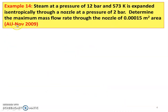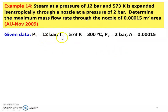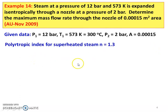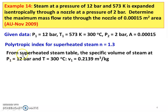The next question is from November 2009 question paper. Steam at a pressure of 12 bar and 573 Kelvin (300 degree Celsius) is expanded isentropically through a nozzle to a pressure of 2 bar. Determine the maximum mass flow rate through the nozzle of 0.00015 meter square area. We are given P1 equals 12 bar, T1 equals 573 Kelvin, P2 equals 2 bar, and area A equals 0.00015 meter square. From the superheated steam table at 12 bar and 300°C, V1 equals 0.1239 meter cube per kilogram.